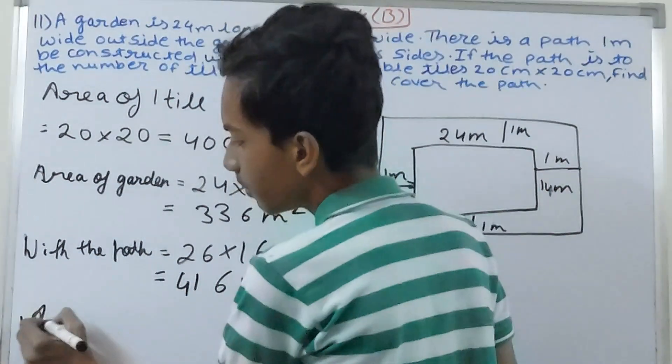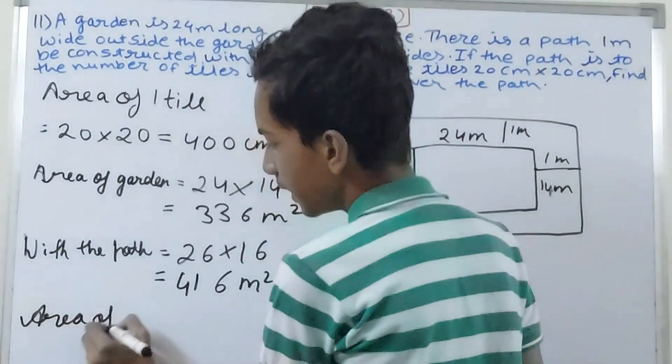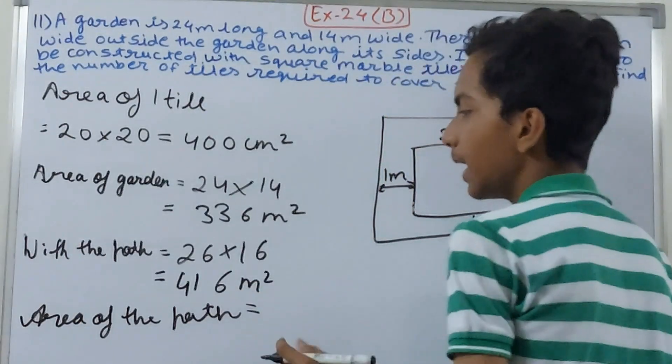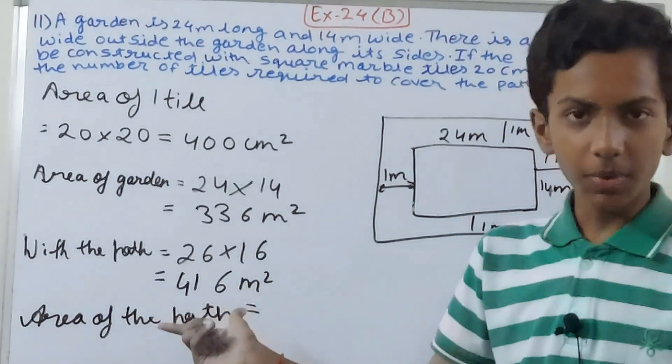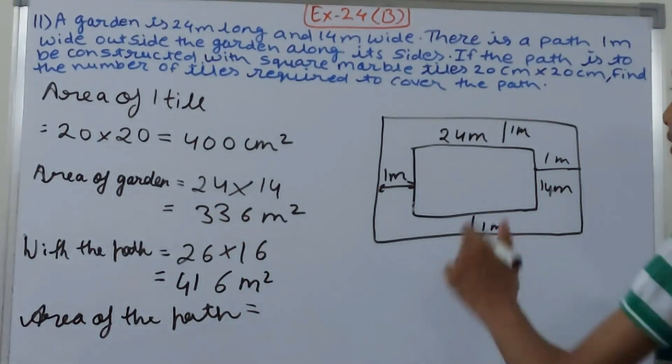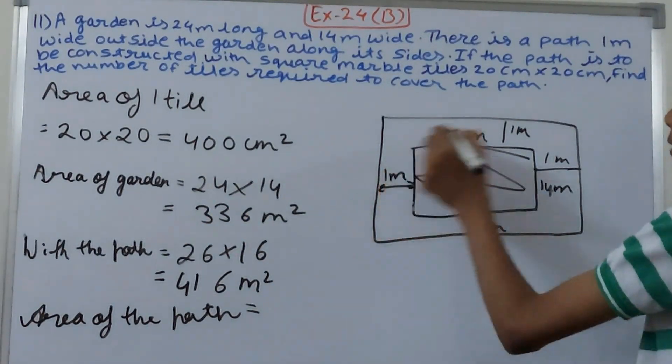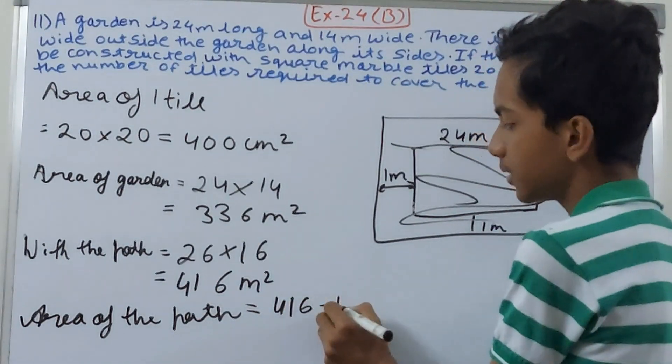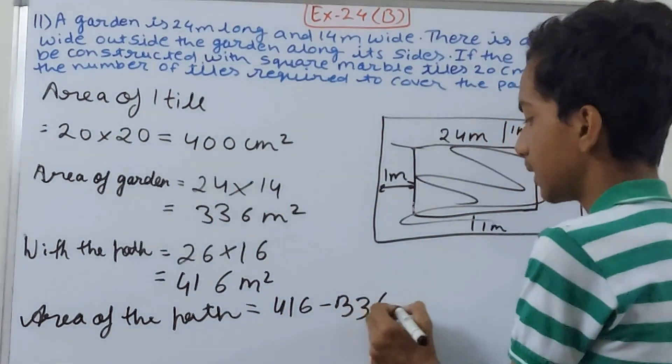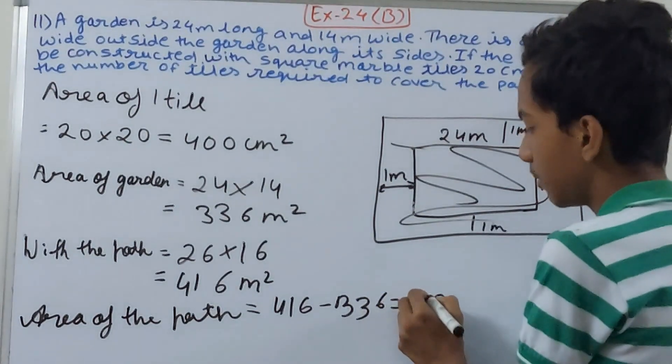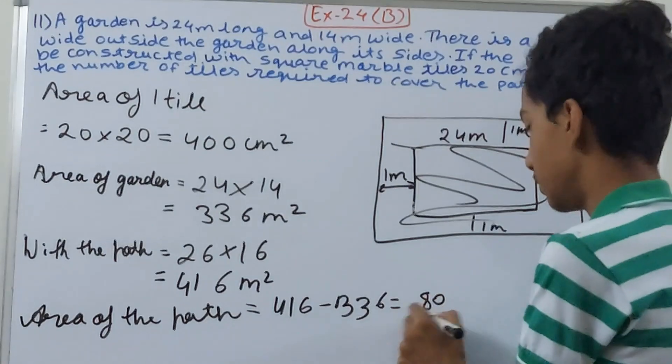So what do we get here? Area of the path. Simply subtract area of the garden from the entire total area. That becomes 416 minus 336, that will be 80 square meters. This becomes the area of the path.